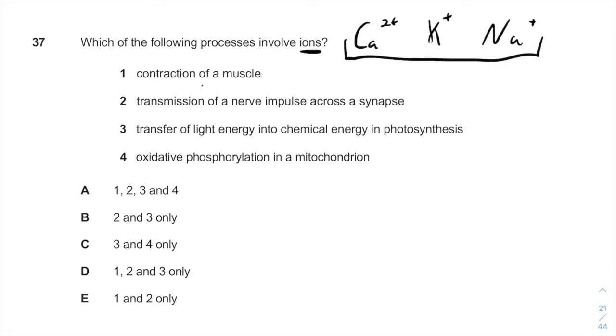The contraction of the muscle involves calcium ions. The transmission of a nerve impulse across a synapse involves many different ions. And honestly all those different processes involve many different ions. But the main ones for muscle are calcium and the transmission of nerve impulse across the synapse is also those three.